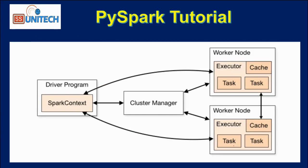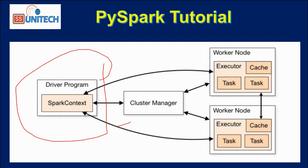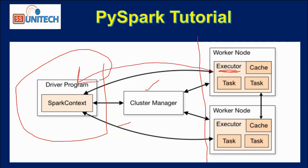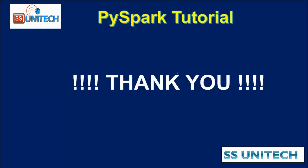Next is the architecture of PySpark — how PySpark works. When we receive a request, it comes into the driver program. The driver program creates different tasks, and then the cluster manager connects with the worker nodes and starts the executors. The cluster manager assigns those tasks from the driver program to the worker nodes. Once the worker nodes process the tasks, results go back to the driver program. All the processing happens on the worker nodes, and we can also do parallel processing.